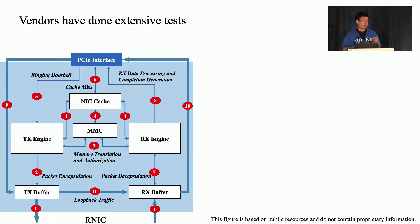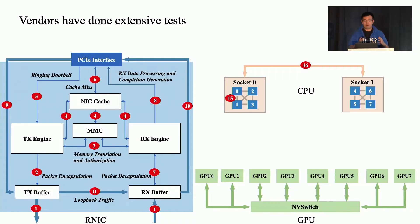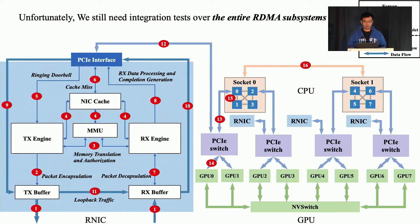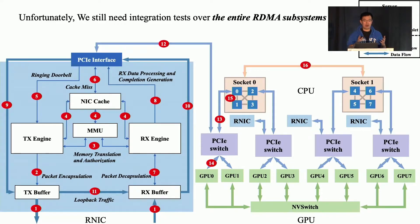The good news is that vendors have done extensive tests. There are several components and corresponding potential bottlenecks inside RDMA NICs, and RDMA NIC vendors have done a lot of tests before manufacturing them. Similarly, other hardware vendors also conduct extensive tests on their individual hardware components such as CPU and GPU. But unfortunately, that's not enough. RDMA offloads a lot of complex logic into the hardware and also has complicated interactions with other hardware components, making individual hardware tests inadequate.